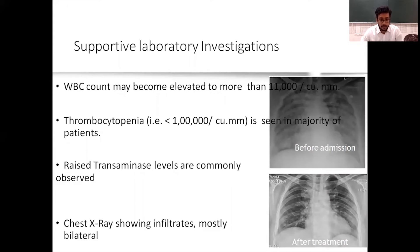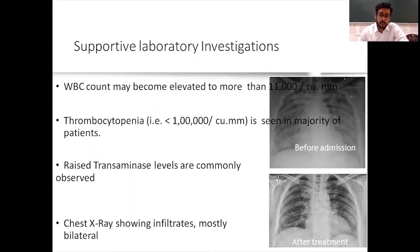Other supportive laboratory findings: total count is often elevated above 11,000; thrombocytopenia (less than one lakh) is seen in the majority of cases; raised transaminase levels are a common feature. Chest X-ray may show bilateral infiltrates — you can see bilateral basal infiltrates on the pre-treatment X-ray, while the post-treatment X-ray shows these shadows have disappeared, indicating recovery from pulmonary infiltrates.